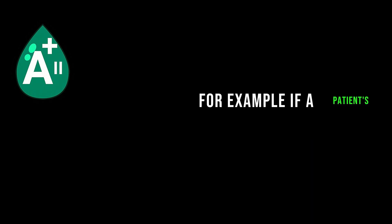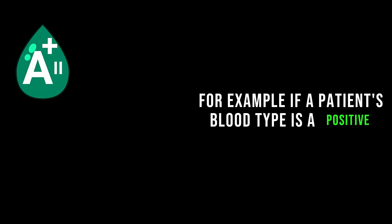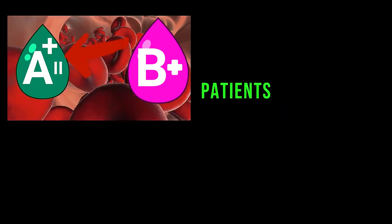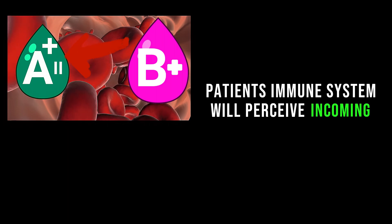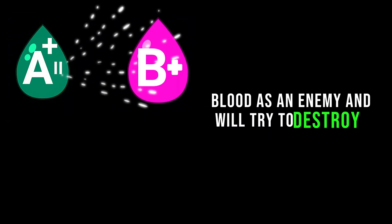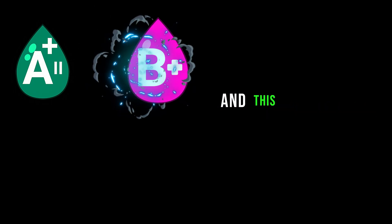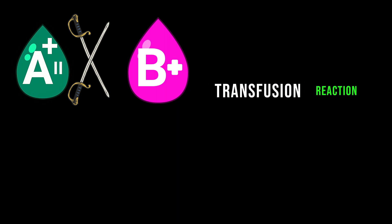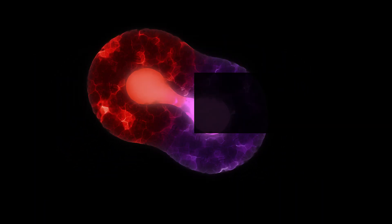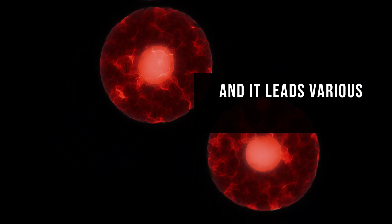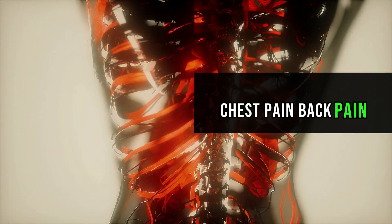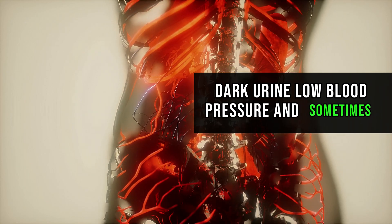For example, if a patient's blood type is A positive and you transfuse blood from a type B positive person, the patient's immune system will perceive the incoming type B blood as an enemy and will try to destroy it. This is called hemolysis, and the reaction is called a hemolytic transfusion reaction. This blood destruction process is a huge stress for the patient's organism and leads to various symptoms such as fever, chills, chest pain, back pain, dark urine, low blood pressure, and sometimes even death.